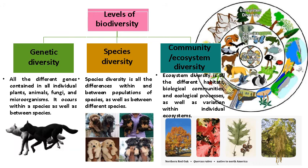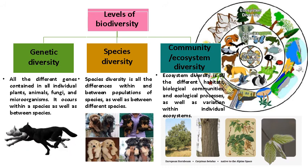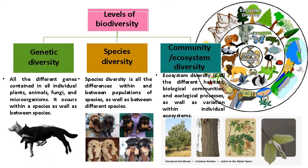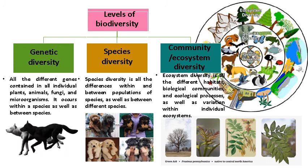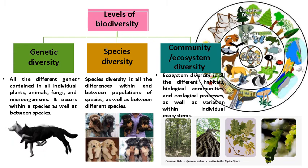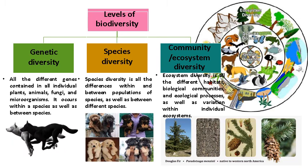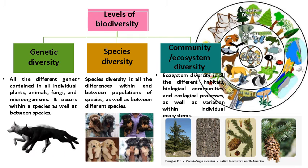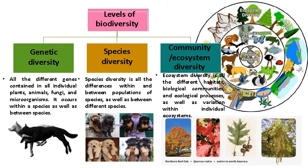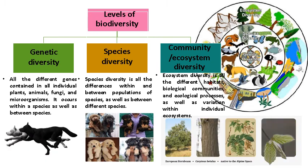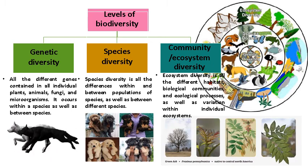Now we come to species diversity. Species diversity is a variety of species within a habitat or a region. For example, plants, animals, fungi, and microorganisms such as palm trees, elephants, or bacteria. Some habitats such as rainforests and coral reefs may have many species; others such as salt flats or polluted streams have fewer. Species can be grouped together into families according to shared characteristics.